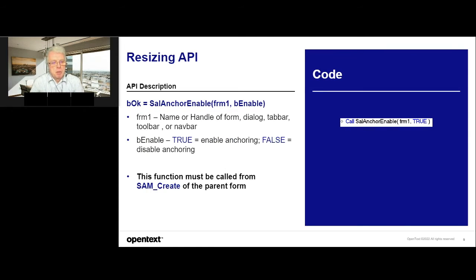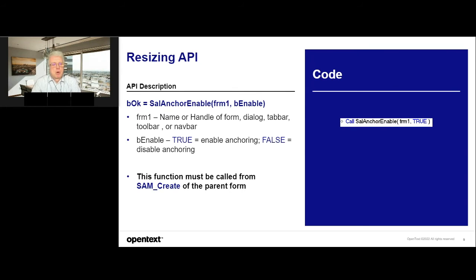Cell Anchor Enable means you can enable anchoring for forms, dialogs, tab bars, toolbars, or navbars inside your application. But you must call this function at the create event of the parent form — you cannot do it after rendering and showing the whole dialog or form and then switch it on, it doesn't work. Before we start displaying something, at the create event, you have to set it. That means cell anchor enabled for a special form, or if there is a tab bar, you can set anchoring enabled for that specific tab bar inside the dialog.